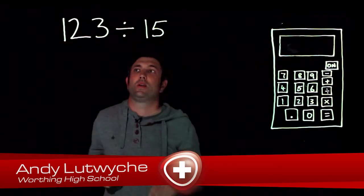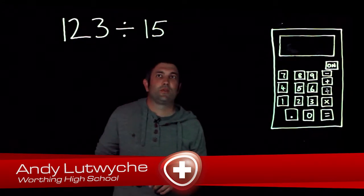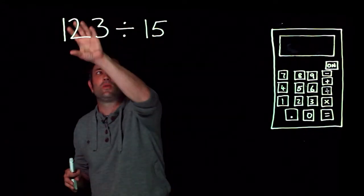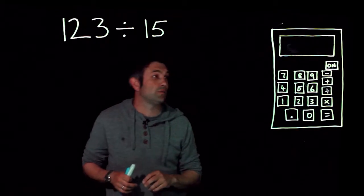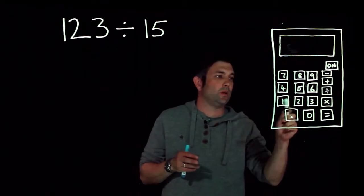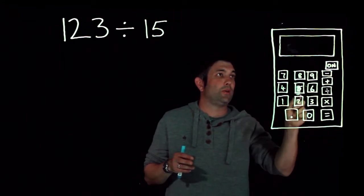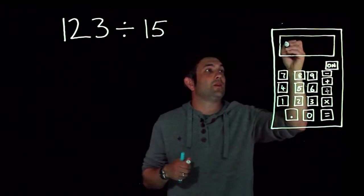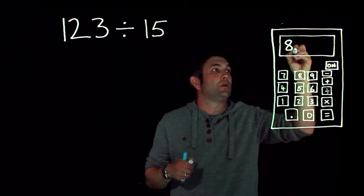We've got this question here: 123 divided by 15. Now we know straight away that 123 is not in the 15 times table, so let's throw that in our calculator. We do 1, 2, 3 divided by 15 and we get the answer 8.2.